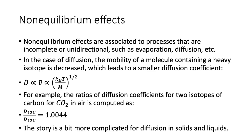Diffusion affects isotopic composition because the diffusivity constant is proportional to the mean velocity of the atoms, which is inversely proportional to mass. So a heavier element moves at a lower speed and has lower diffusivity. For example, carbon-13 and carbon-12 have different diffusivity constants.